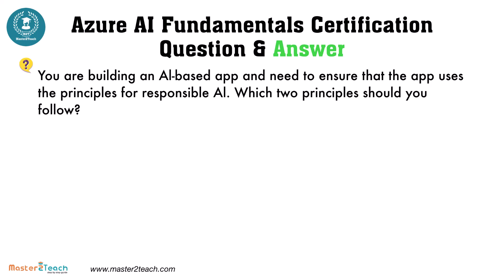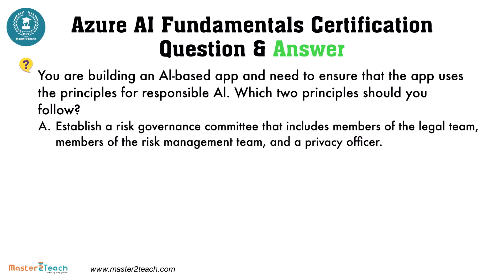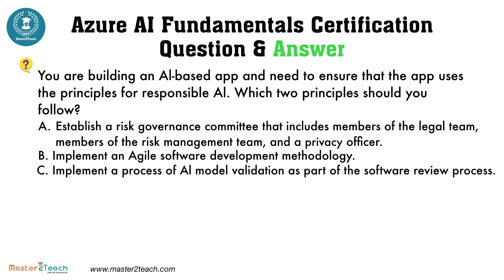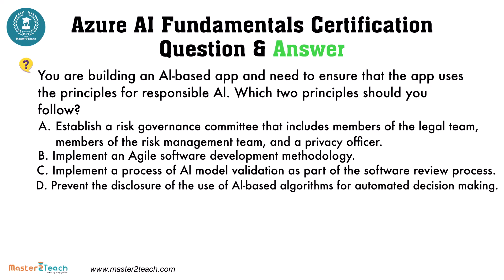Which two principles should you follow? The options are: A, establish a risk governance committee that includes members of the legal team, members of the risk management team, and a privacy officer; B, implement an agile software development methodology; C, implement a process of AI model validation as part of the software review process; D, prevent the disclosure of the use of AI-based algorithms for automated decision making.